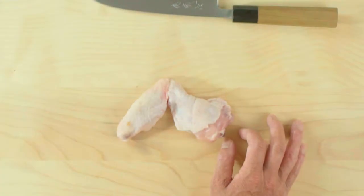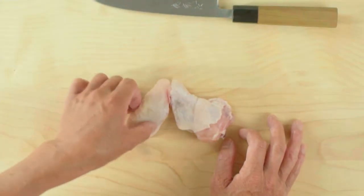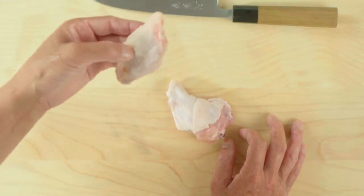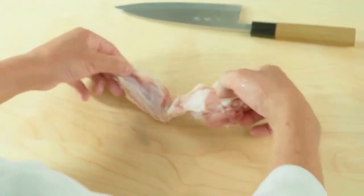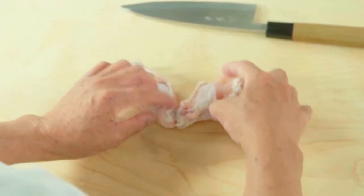If you happen to buy chicken wings that are sold with the drumsticks still attached to the wing, make sure to separate them. When separating, put the knife between the joints and cut.